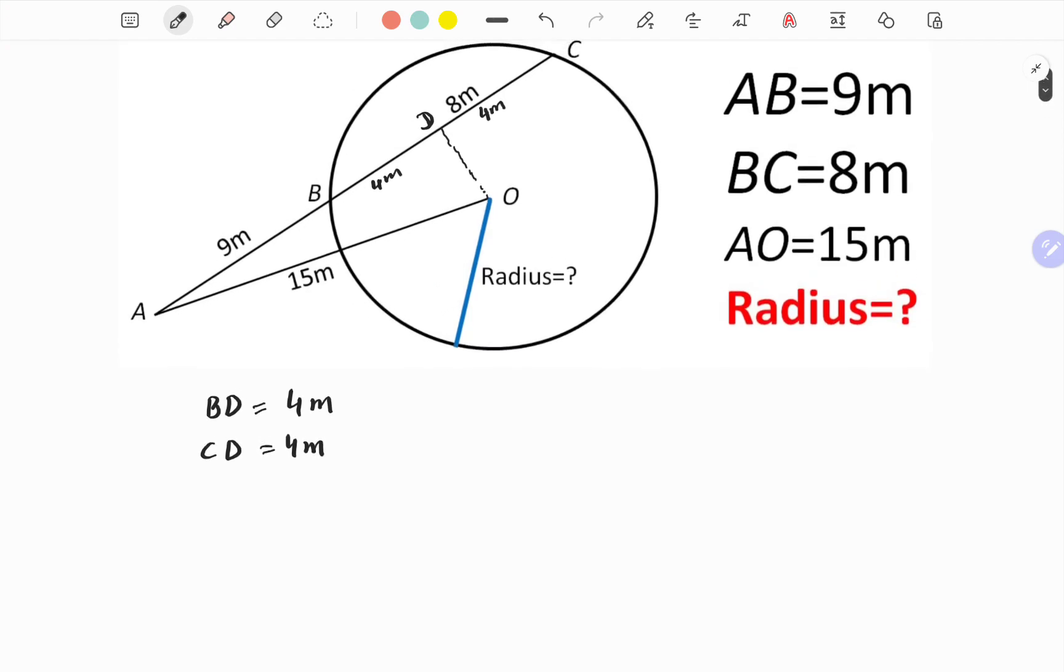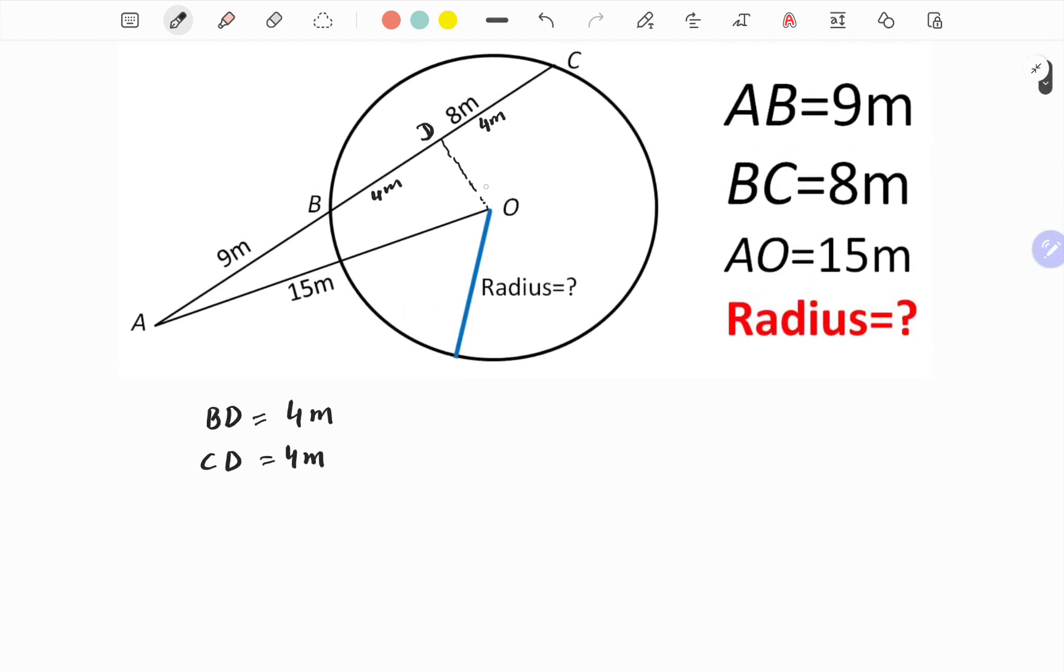Here now, let we call this length OD as x. Then AD length is, this implies that length AD will be equal to AB plus BD, which is equal to 9 meters plus 4 meters. Thus AD is equal to 13 meters.